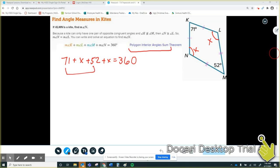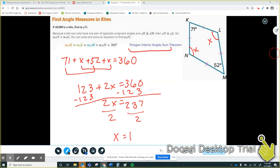I'm going to go through and solve, combine like terms. Subtract 123 from both sides. I get 237. Then finally, divide both sides by 2 to get rid of the 2. And I get that X is equal to 118.5. So I have found this angle right here, which is angle N. That is what they want me to do. I'm done with this problem.